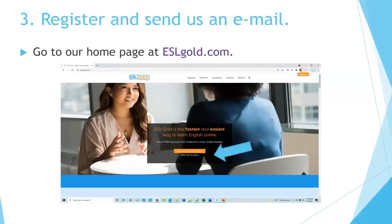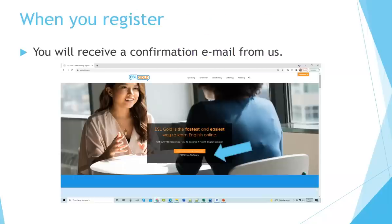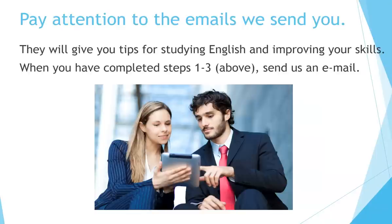Number three, register and send us an email. Go to our homepage at eslgold.com and you'll see a link that says 'click here for free resources' — that's how you can register on our website. When you register, you will receive a confirmation email from us. Pay attention to the emails we send you; they will give you tips for studying English and improving your skills. When you have completed steps one to three, send us an email.